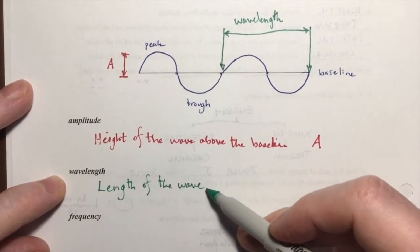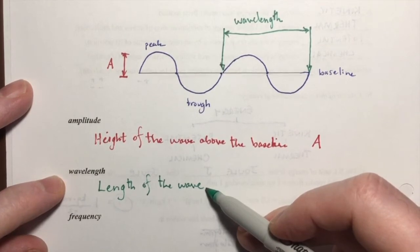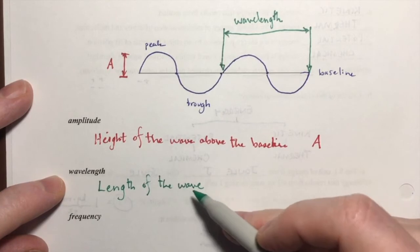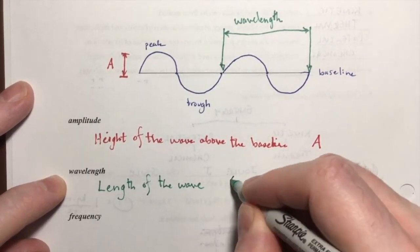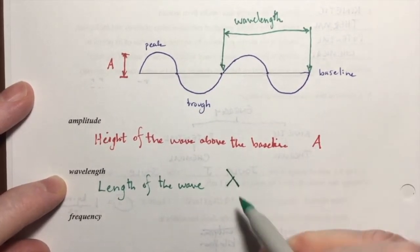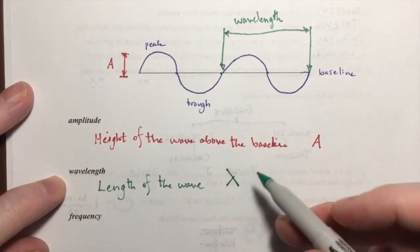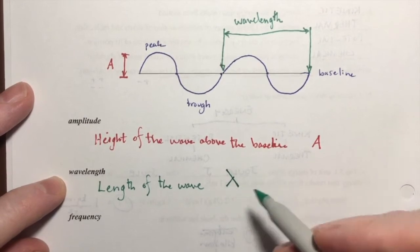So the wavelength is the length of the wave. What units of measurement could a wavelength be measured in? Well, any unit of length. It could be measured in meters, it could be measured in centimeters, it could be measured in nanometers.